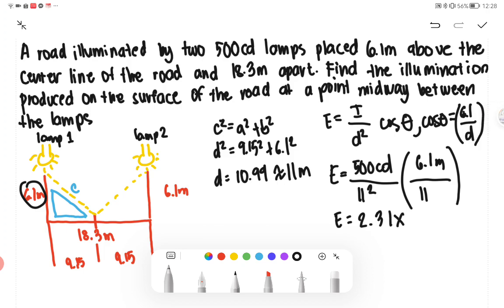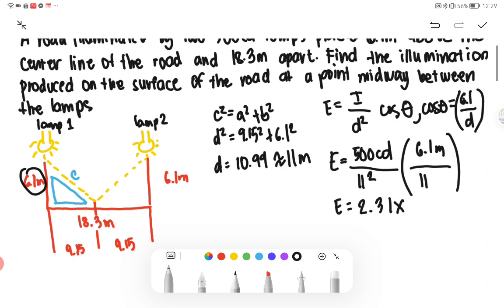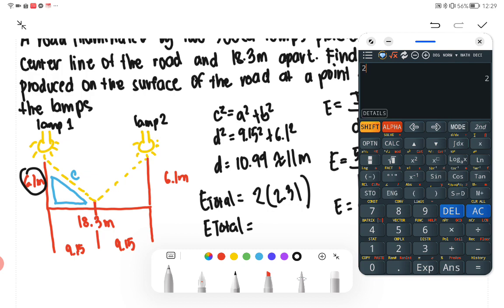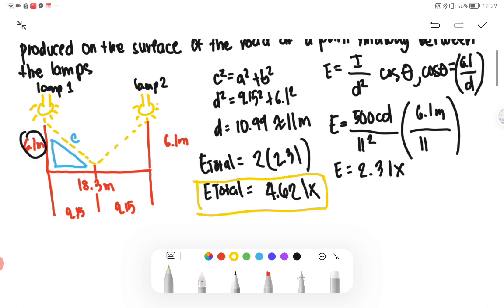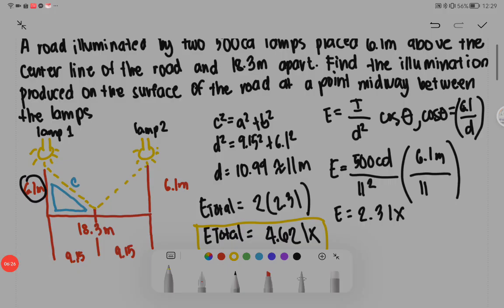As I said earlier, we have here identical setup. So illumination from lamp 1 and lamp 2 is equal. The total value of illumination here is simply 2.3 by 2. Our E total value is equivalent to 2.31 times 2, we have 4.62 lux. And that would be our final answer. Thank you.